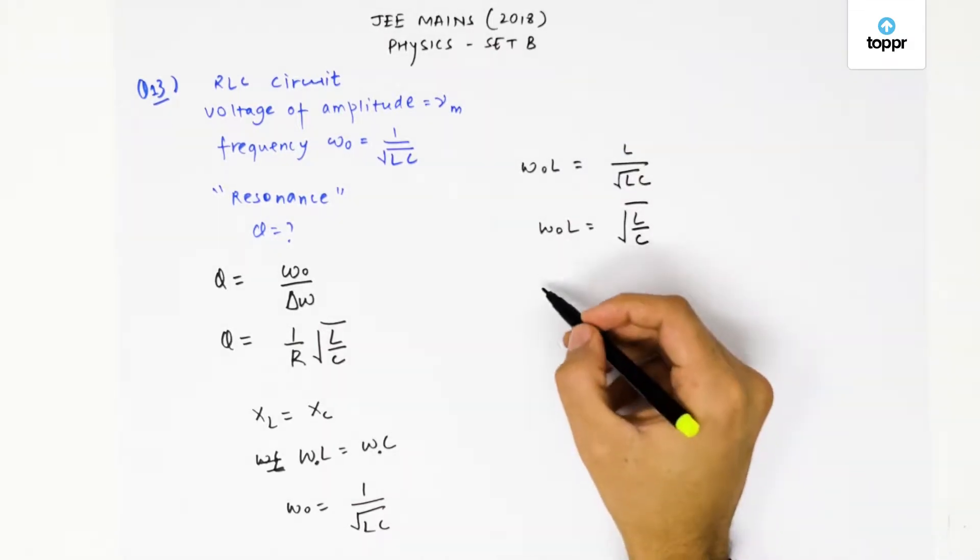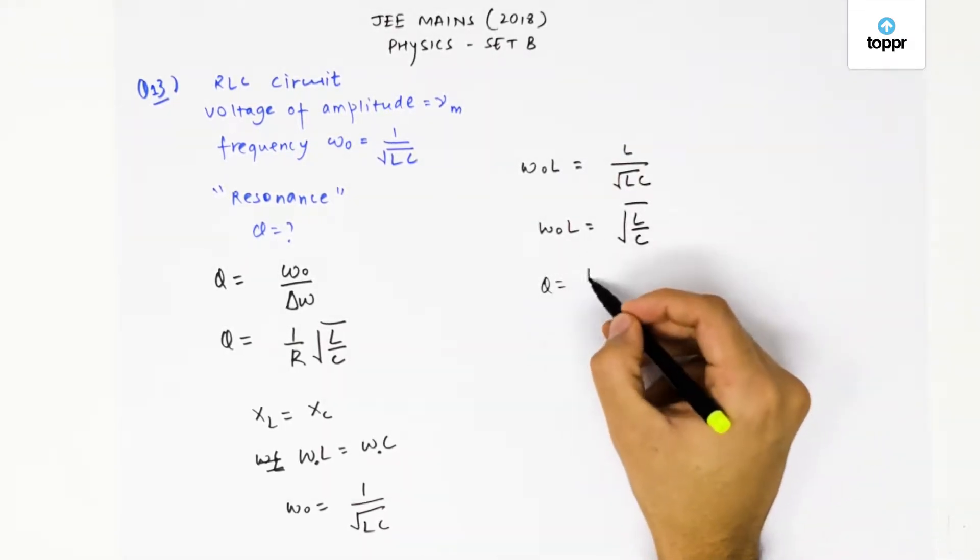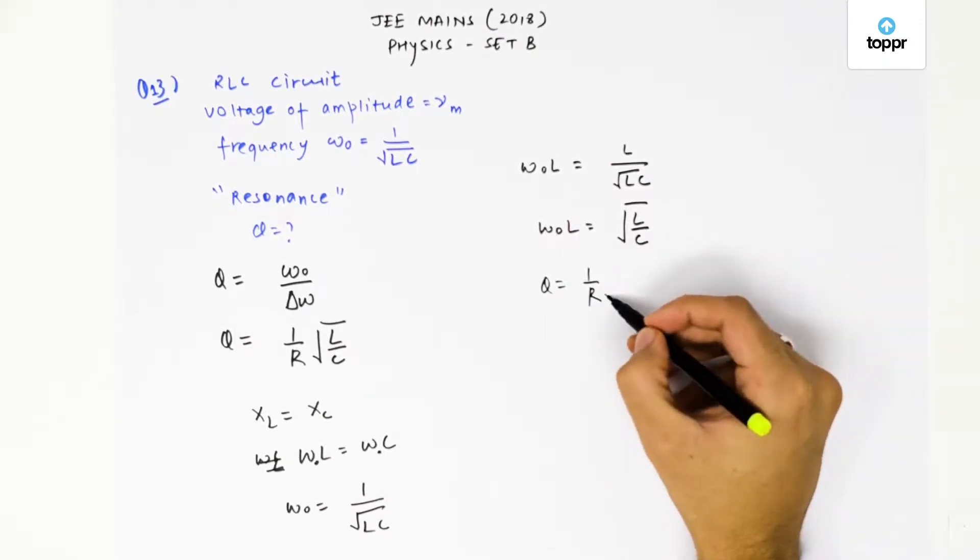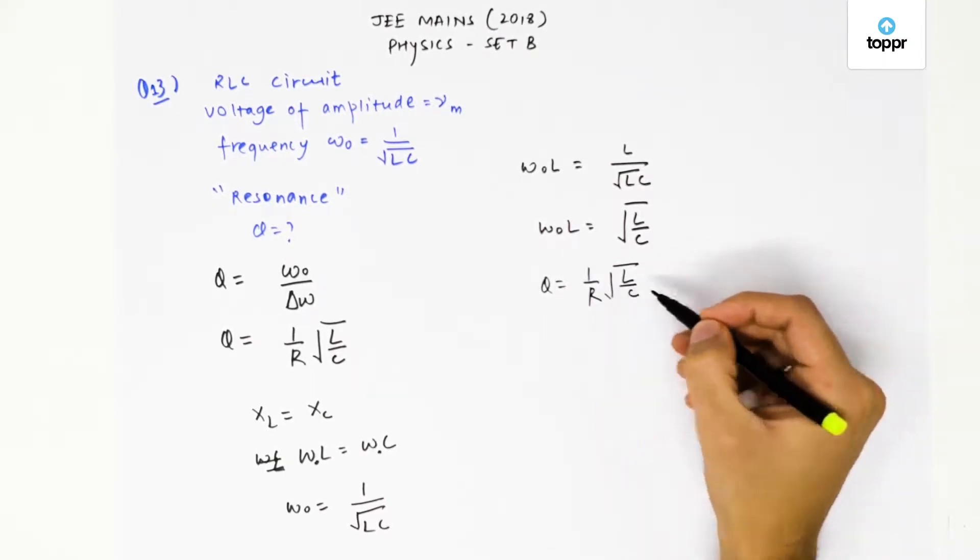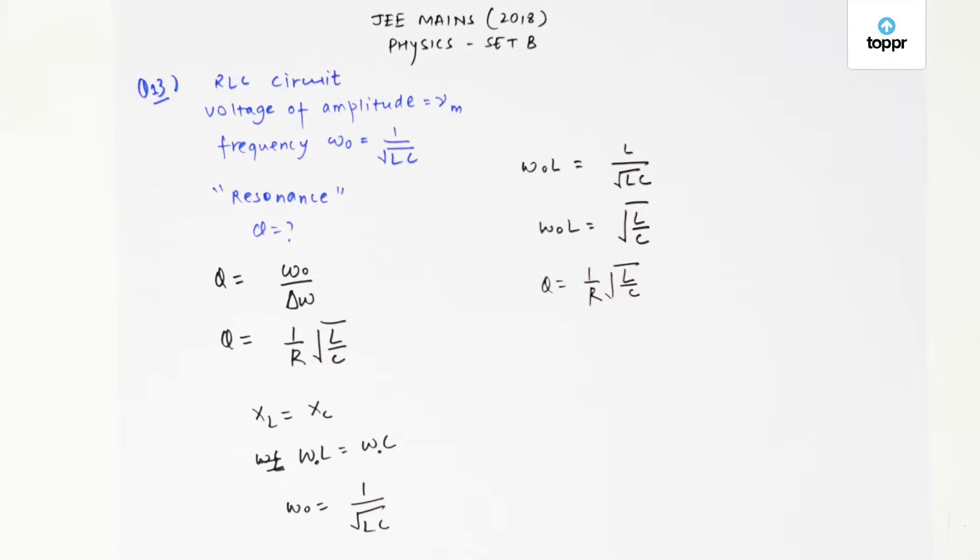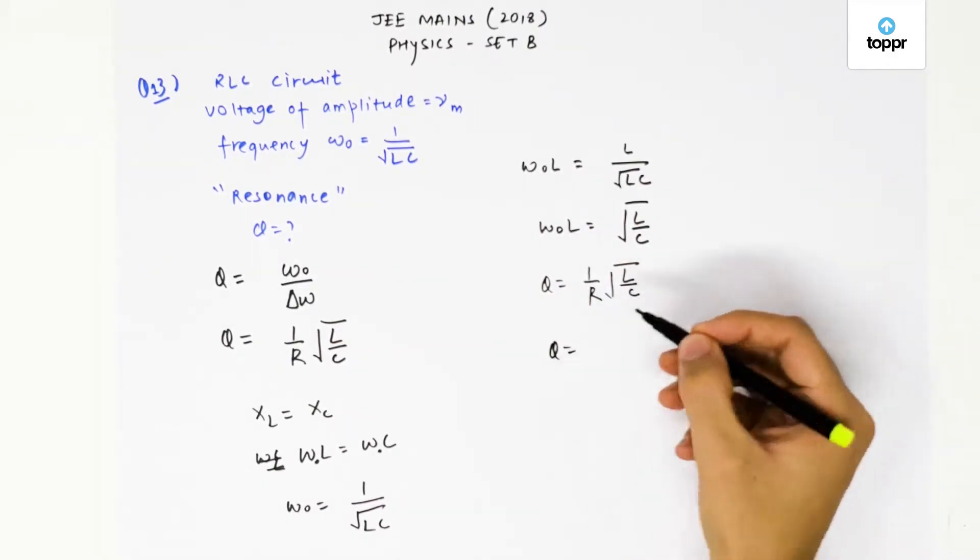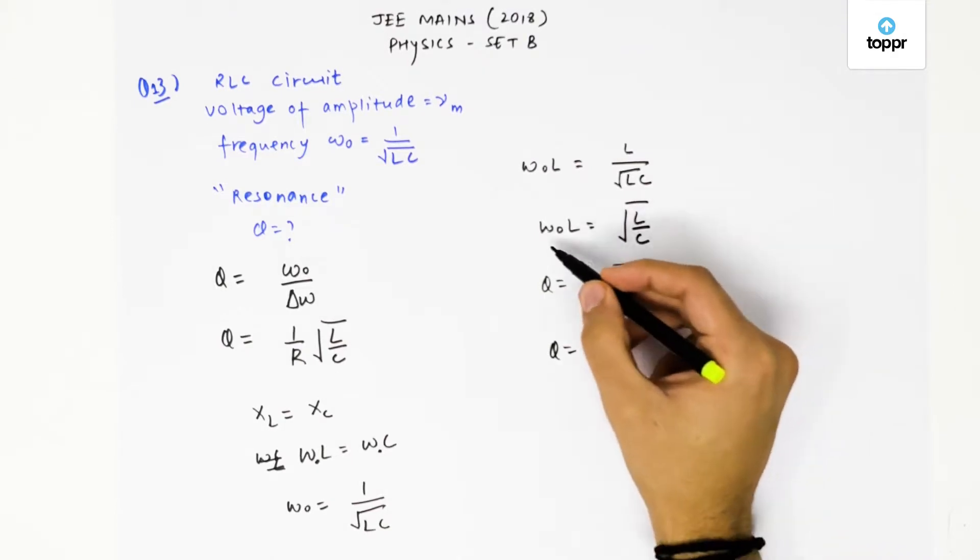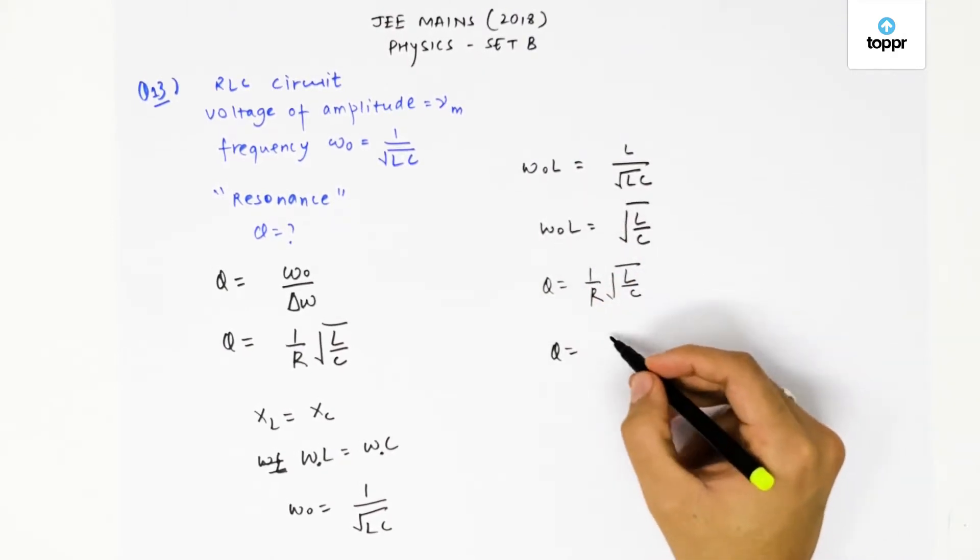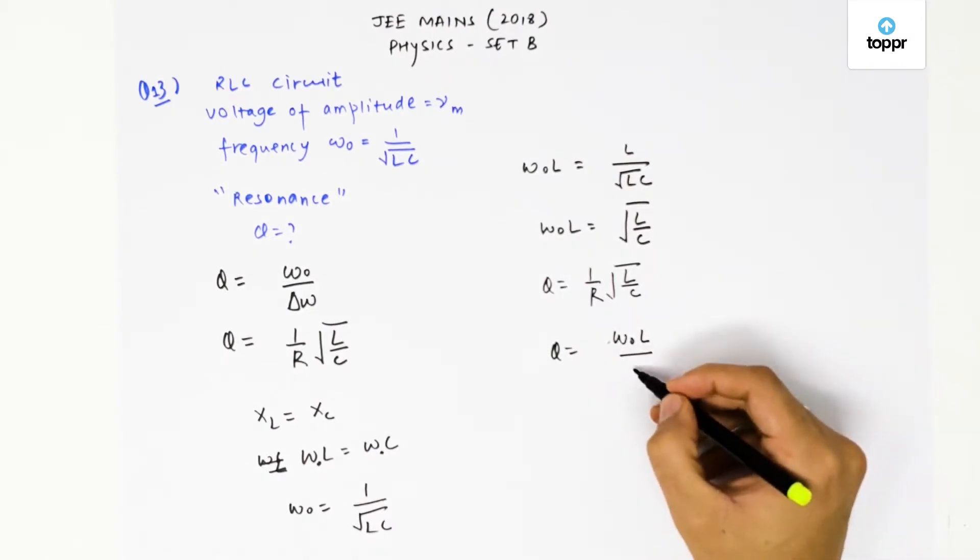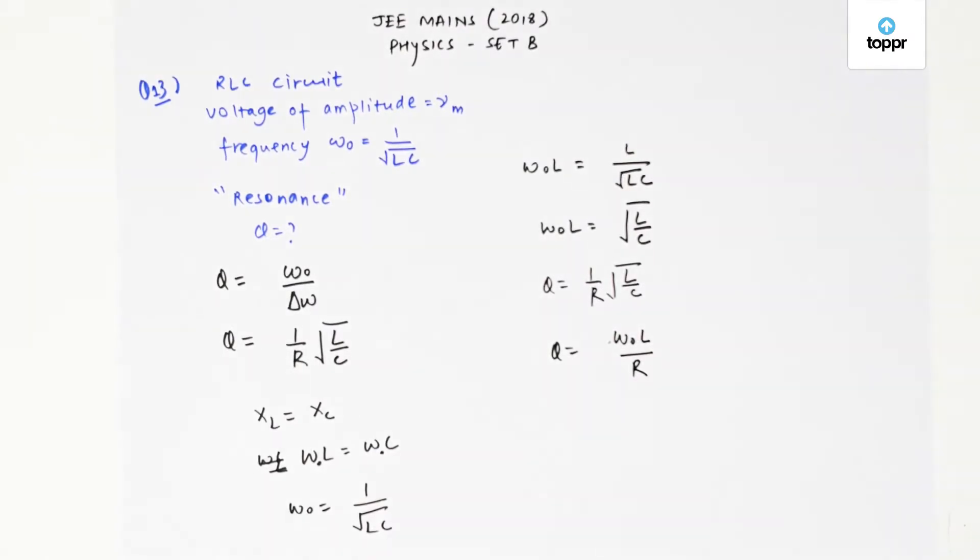Now, because the quality factor is Q = (1/R)√(L/C), and √(L/C) we already know equals ω₀L, the quality factor would be Q = ω₀L/R, and this is our final answer.